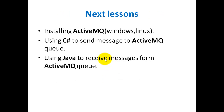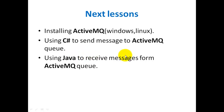ActiveMQ fully supports JMS 1.1 and Java EE 1.4. In the next lessons we will talk about installing ActiveMQ on Windows and Linux. After that, we will use C# to send messages to ActiveMQ and provide an example to receive messages from ActiveMQ. Thank you for watching — please subscribe to be notified when I upload the next lesson.